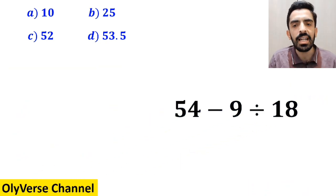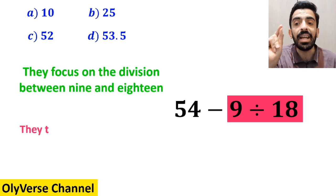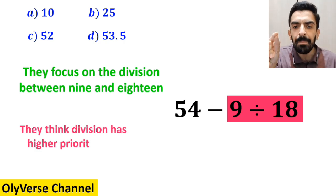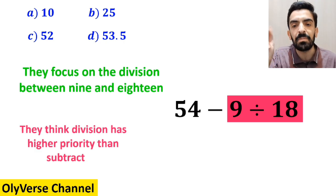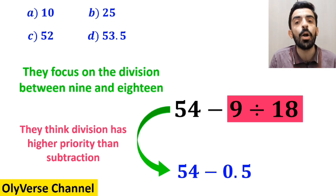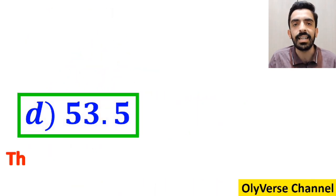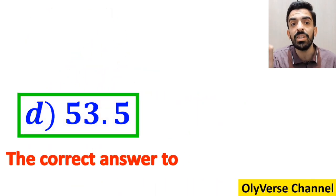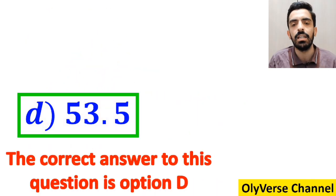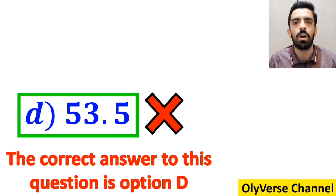And the final step, they focus on the division between 9 and 18, because they think division has higher priority than subtraction, and replace this expression with 54 minus 0.5, which equals 53.5. And immediately they conclude that the correct answer to this question is option D. However, this answer is absolutely wrong.